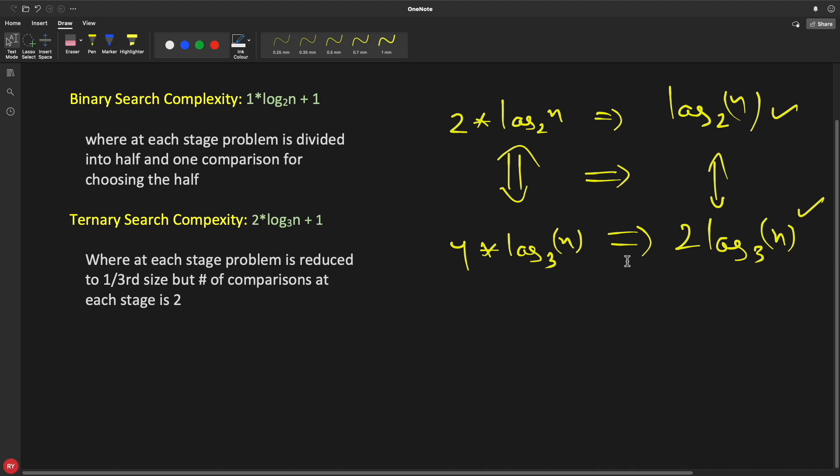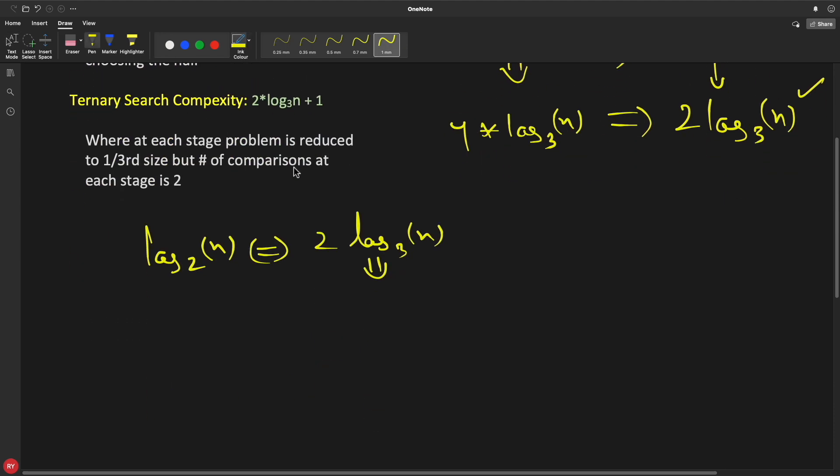So let's try to compare these two and what we are doing here is we are comparing log₂ n with 2 log₃ n. So this can be converted into something like this.